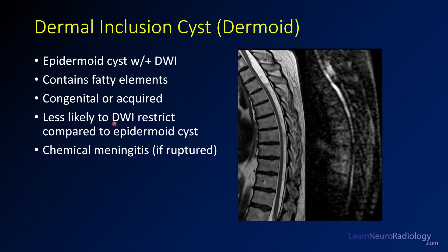Dermoids contain multiple embryonal layers and can contain fatty elements. They are less likely to have diffusion restriction compared to epidermoids, which can be positive on diffusion-weighted imaging. If dermoid cysts rupture, much like dermoids in the brain, they can cause a chemical meningitis.